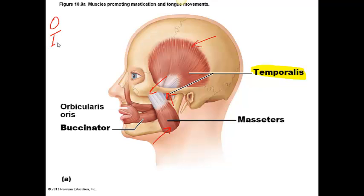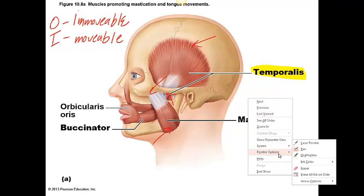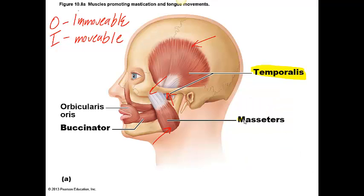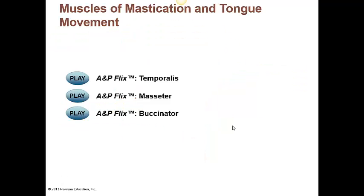Remember that the origin is the point of attachment to the immovable — or less movable — bone, whereas the insertion is the point of attachment to the more movable bone. The other muscles shown on this slide besides the masseter are the buccinator and the orbicularis oris, which is another important muscle you need to know. Make sure that you watch the A&P Flix videos on the temporalis, the masseter, and the buccinator — they are very short videos.